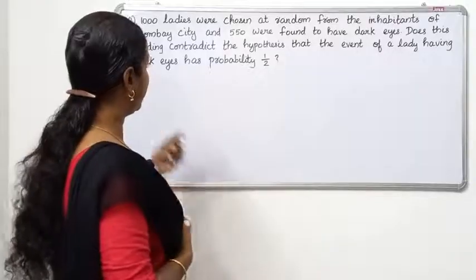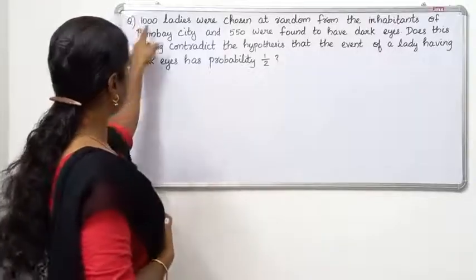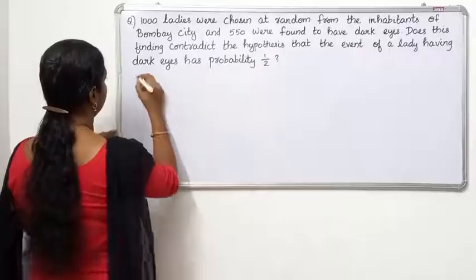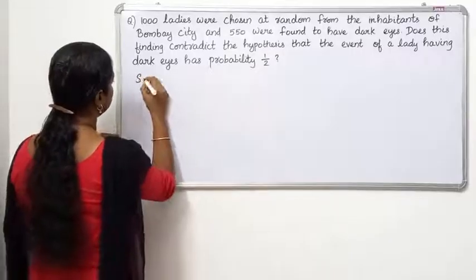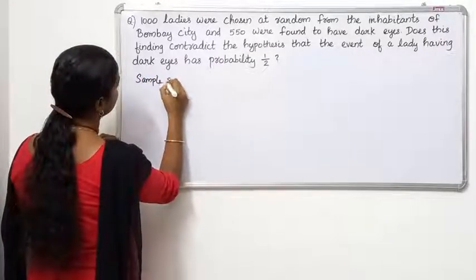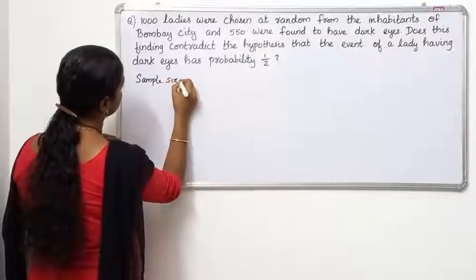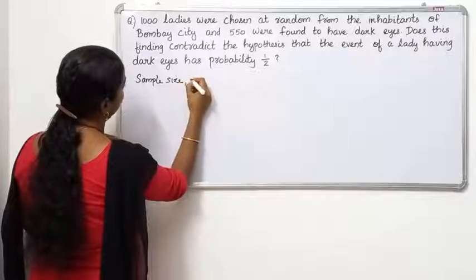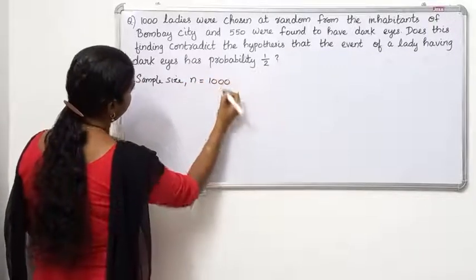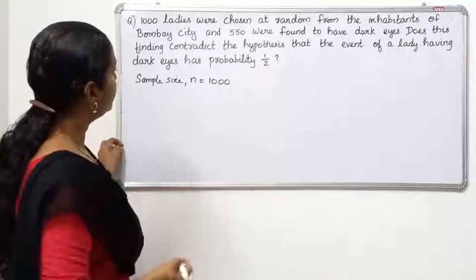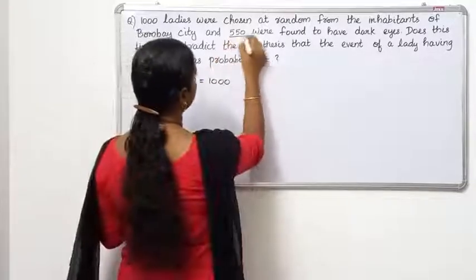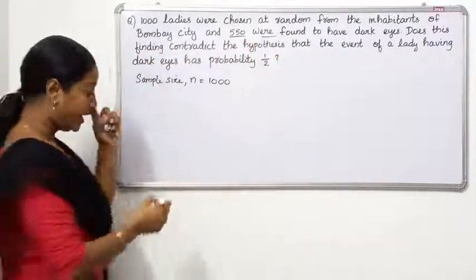The sample size is 1,000 ladies who were chosen at random, and 550 were found to have dark eyes.